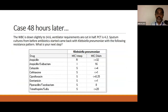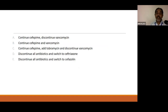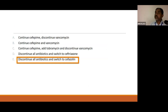In the index case, WBC slightly came down to 14,600, ventilator requirements were also reduced, procalcitonin was 4.2, and sputum culture results from before starting antibiotics returned. Based on these results, all antibiotics are discontinued and switched to a simple third-generation cephalosporin to continue treatment for the recommended duration. Thank you.